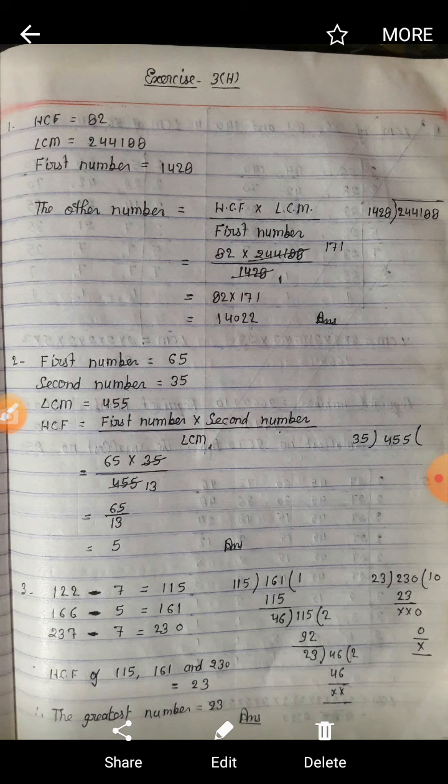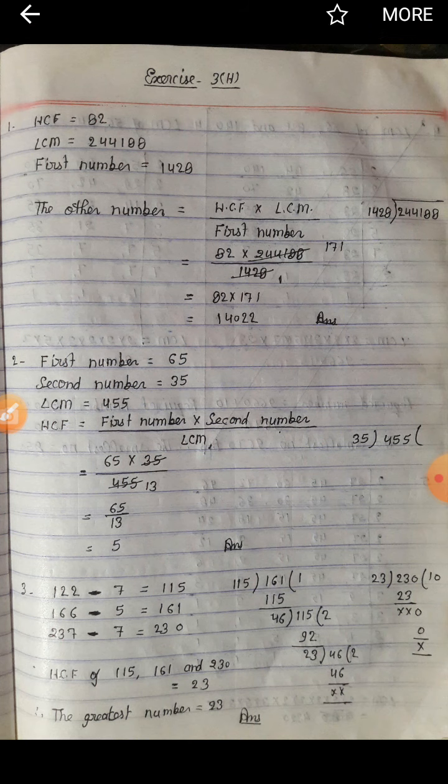The other number = (HCF × LCM) ÷ first number. So: second number = (82 × 2,44,188) ÷ 1428.